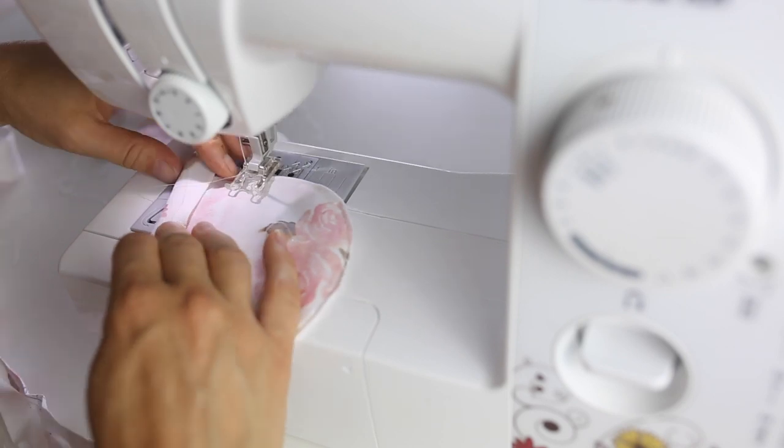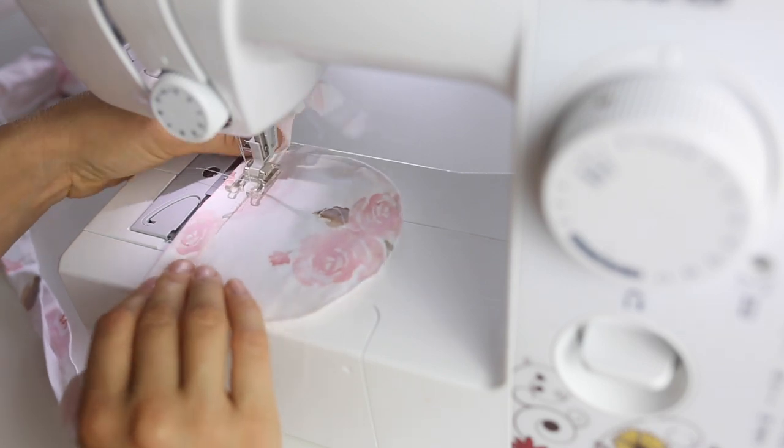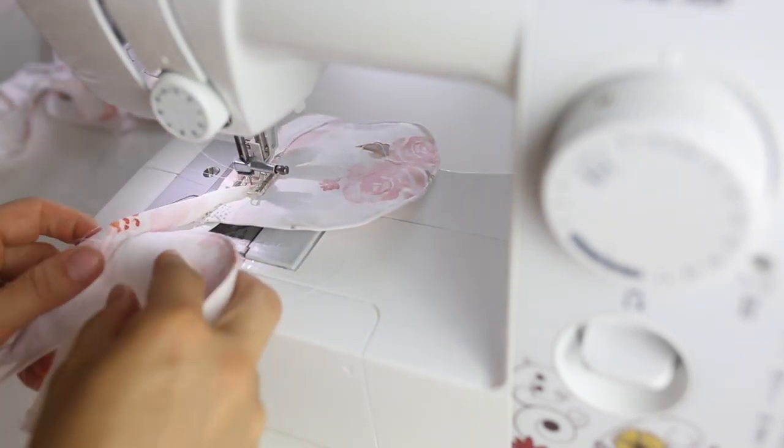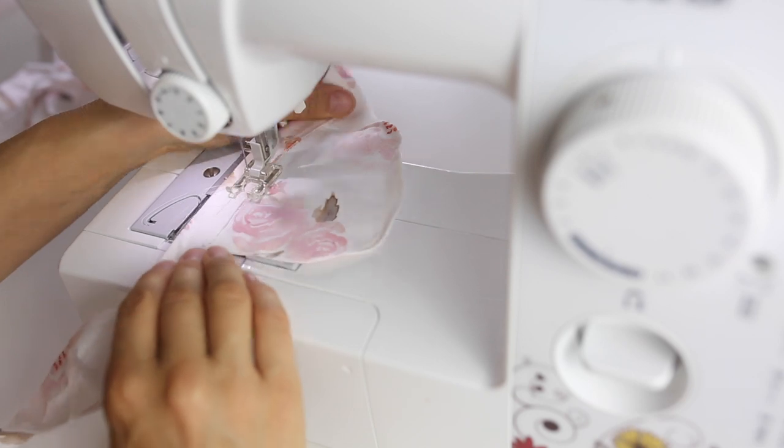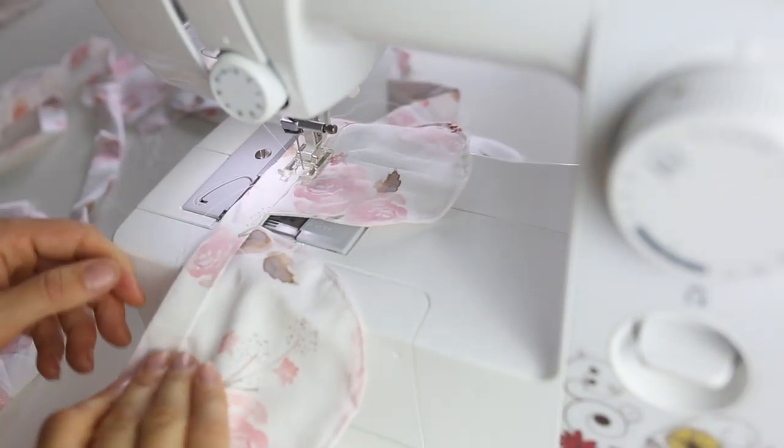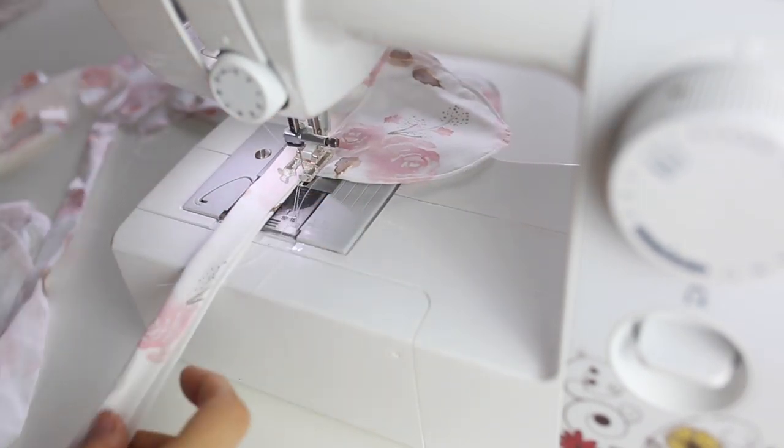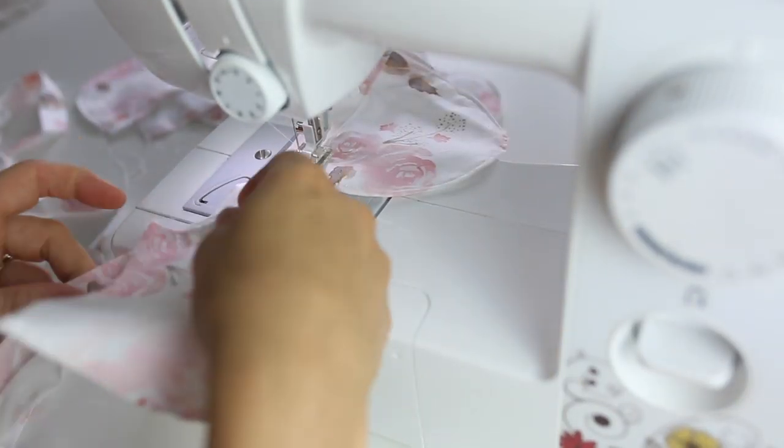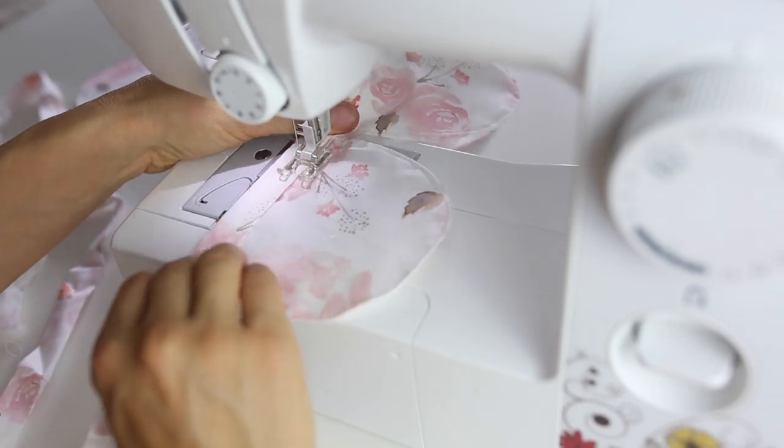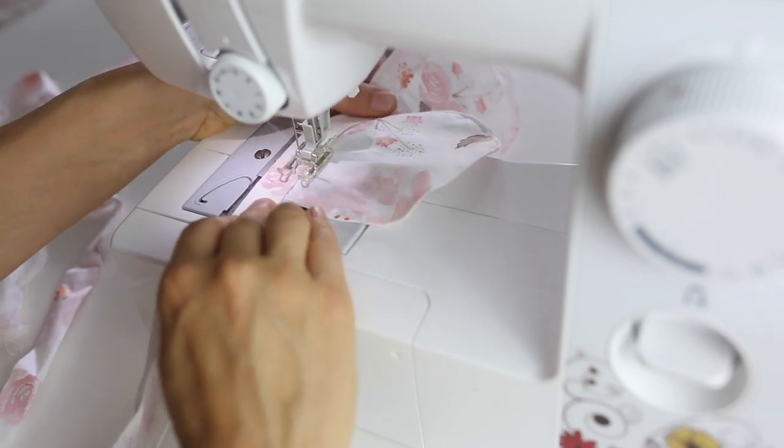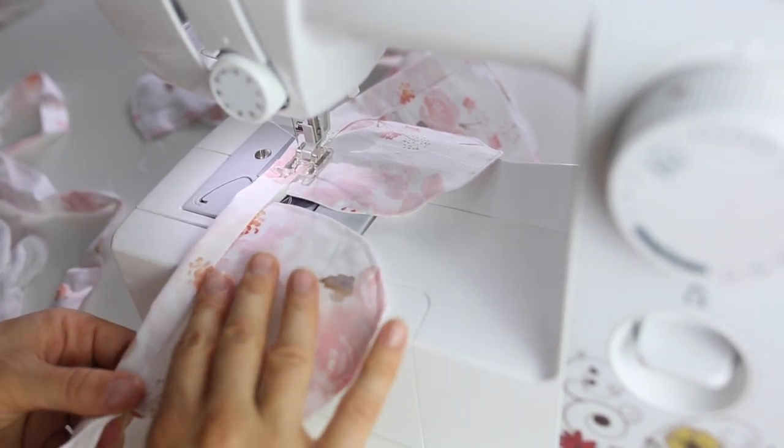Now comes the final fun part. We're going to sew all those bunting pieces inside the casing that we made. I spaced each of my bunting pieces apart about one half of an inch inside my casing.